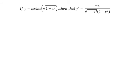Hello everybody, today I will talk about calculus. The topic is about derivatives. If y equals arctan of square root 1 minus x squared, show that the first derivative of y equals minus x over square root 1 minus x squared multiplied with 2 minus x squared. I will show the technique to answer this question.